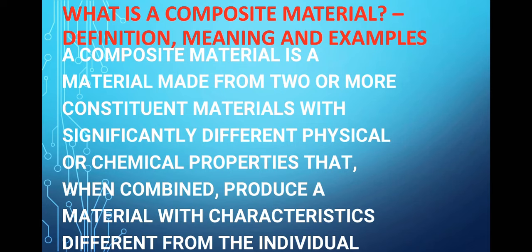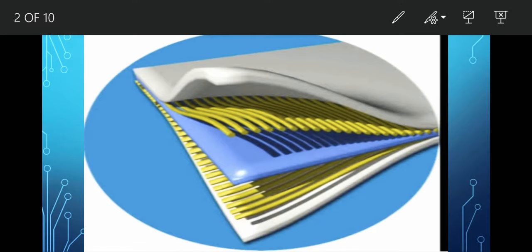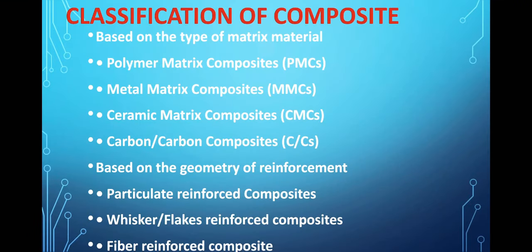After composite materials, the next topic is classification of composite materials. Composite materials are divided into two categories: first, based on type of matrix material — polymer matrix composites, metal matrix composites, ceramic matrix composites, and carbon composites; second, based on geometry of reinforcement — particulate reinforced composites, flax reinforced composites, and fiber reinforced composites.